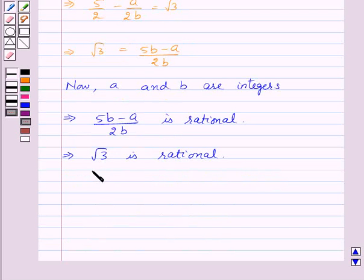But we already know that root 3 is irrational. So that means this is a contradiction, because root 3 is irrational.